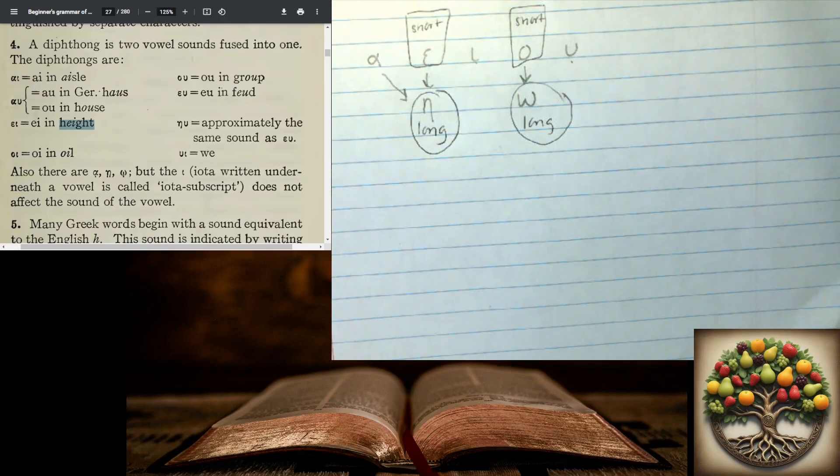We've got the ou as in group. An eu as in feud. And here we have an eta, upsilon. Similar in sounds to this, because that epsilon lengthened into an eta. And this one is the most unusual. The upsilon iota. It sounds like we.